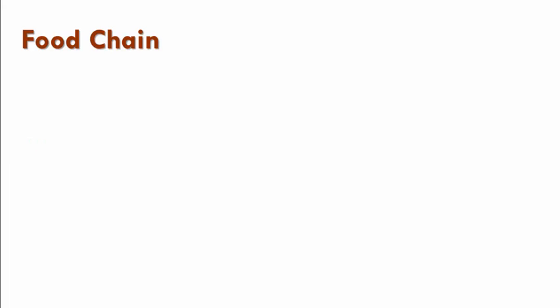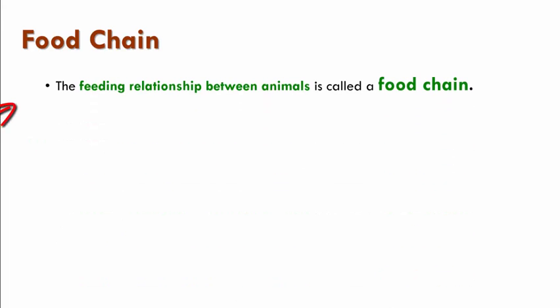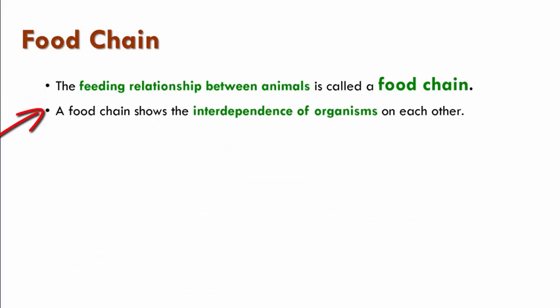Let us move on to understand what is meant by food chain. The feeding relationship between animals is called a food chain, which shows the interdependence of organisms on each other. Interdependence means how a plant is dependent on an animal, how an animal is dependent on a human being, and how a human being is in turn dependent on plants.